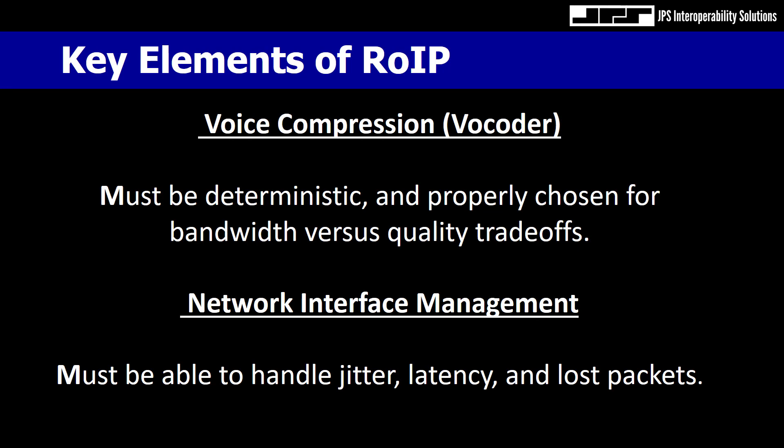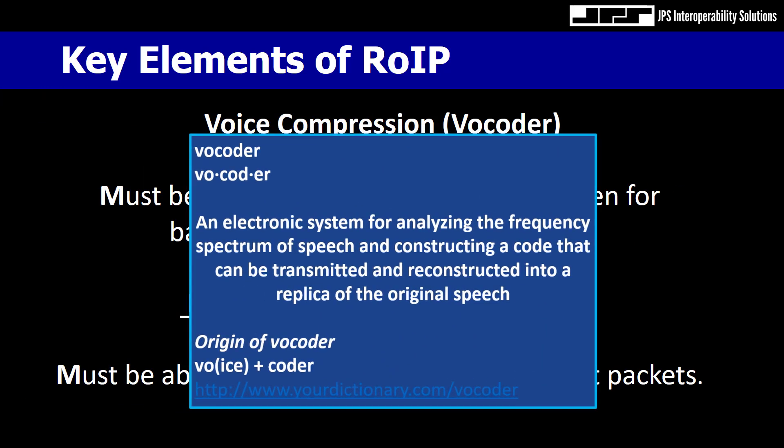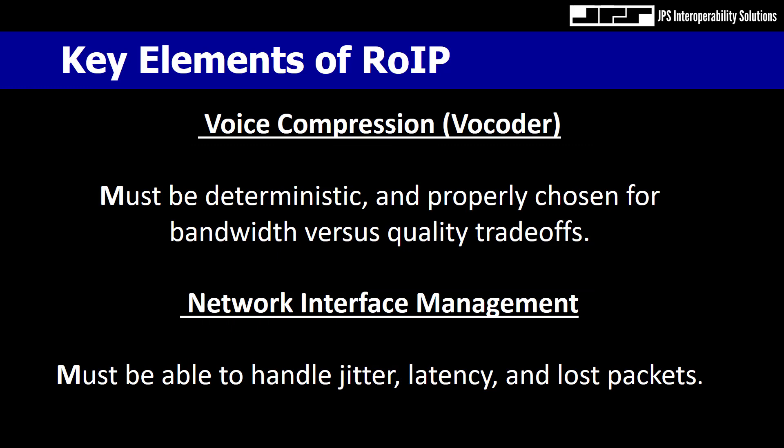So what are the key elements of ROIP — Radio Over Internet Protocol? Voice compression is one of them, and that really is the vocoder. It must be deterministic and properly chosen for bandwidth versus quality tradeoffs. A vocoder is an electronic system for analyzing the frequency spectrum of speech and constructing a code that can be transmitted and reconstructed into a replica of the original speech. Another key element is network interface management, which must be able to handle jitter, latency, and lost packets.